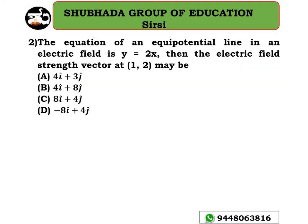Look at the next problem. The equation of an equipotential line in an electric field is y equal to 2x — this is a very good problem. Then the electric field strength vector at point (1, 2) is?